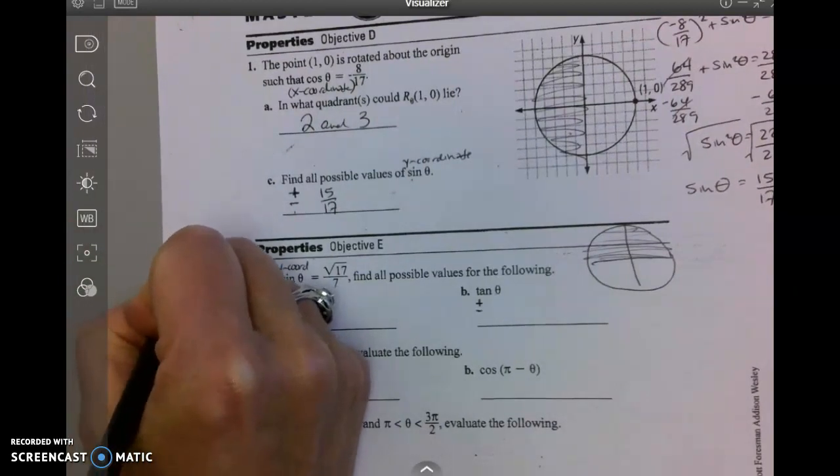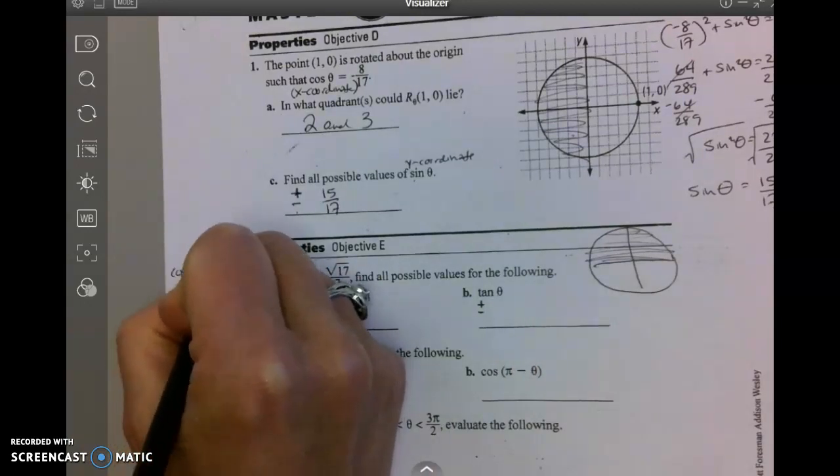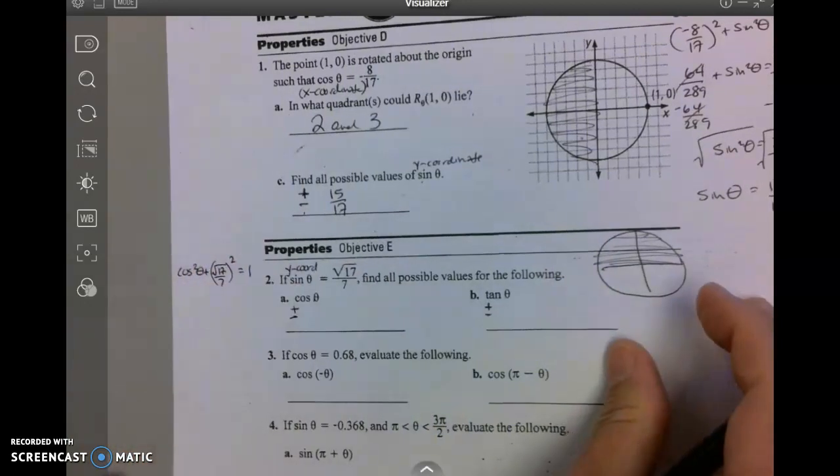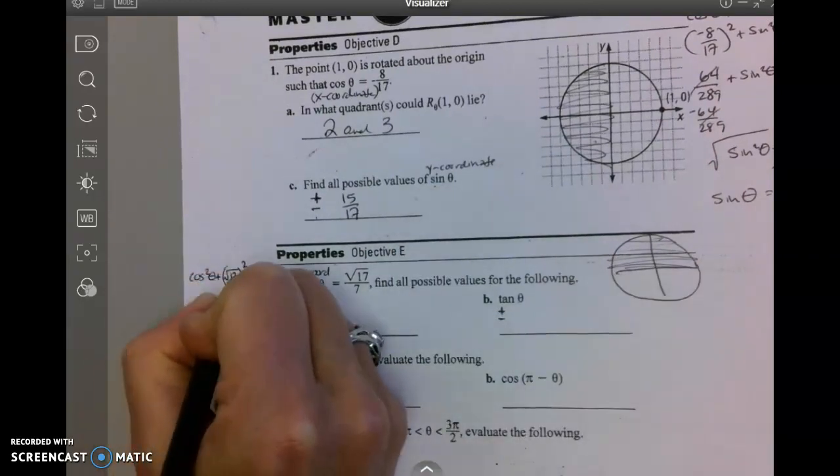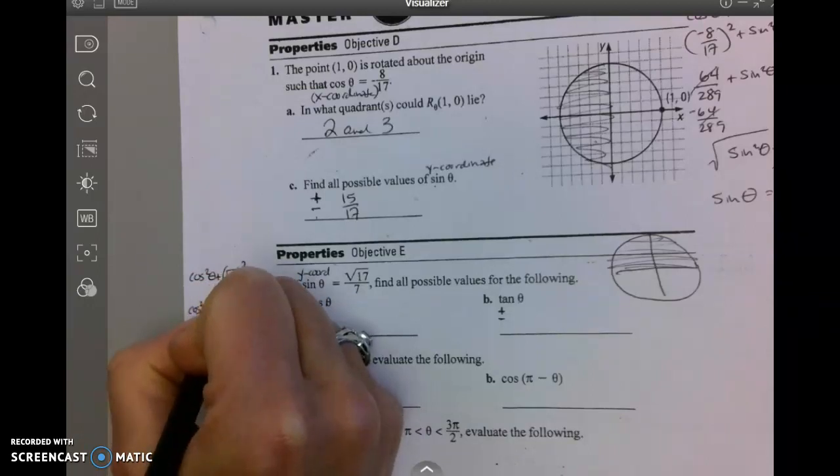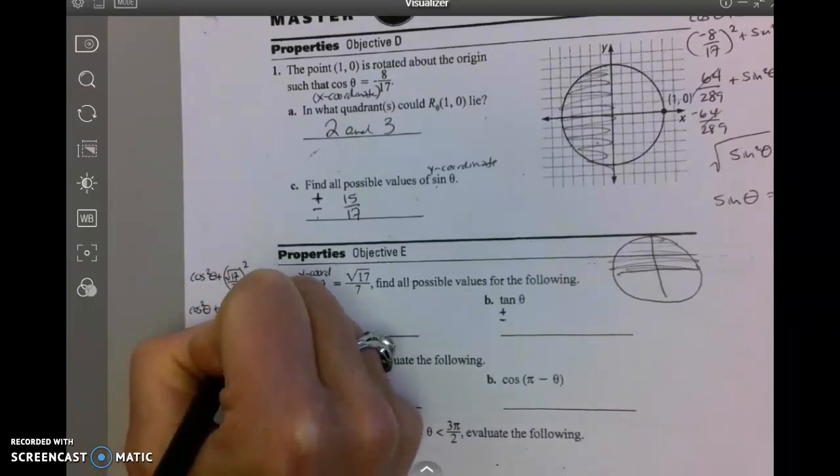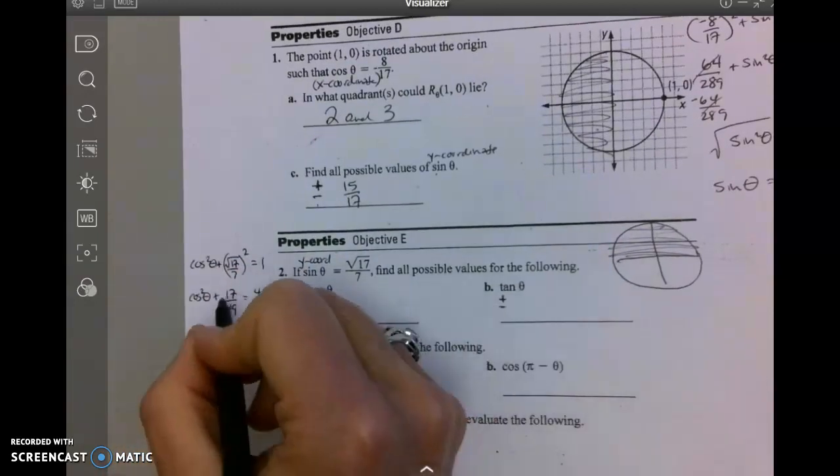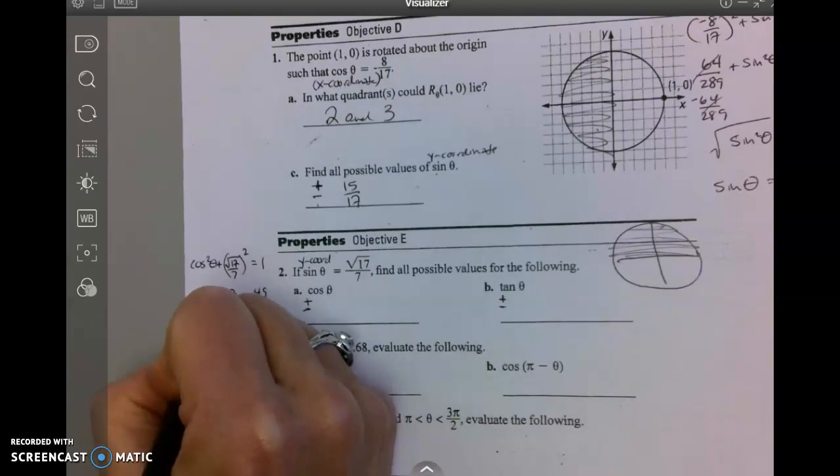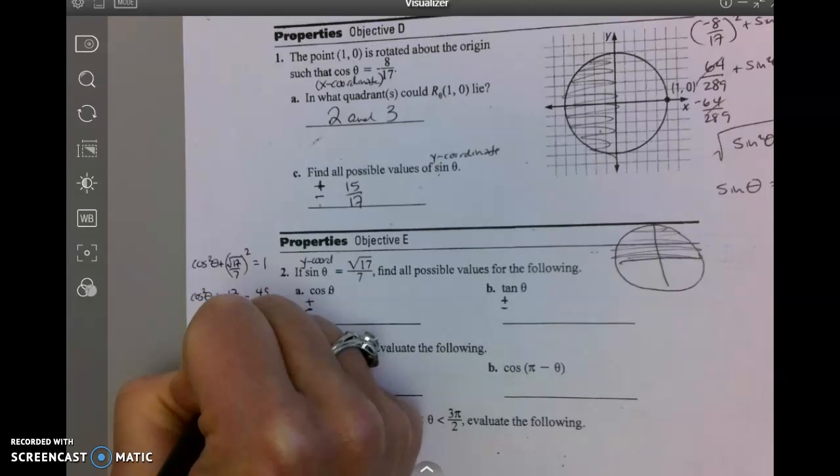Once again, I'm going to use my Pythagorean identity theorem. We've got cosine squared of theta plus sine squared equals one. Let's go ahead and do that: cosine²θ + (√17/7)² = 1. Cosine squared of theta plus 17/49 equals 49/49. Subtract the 17/49 from both sides and I get 32/49.